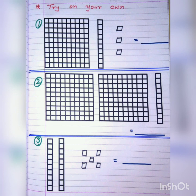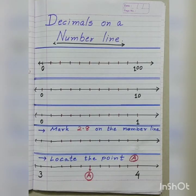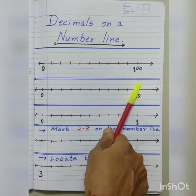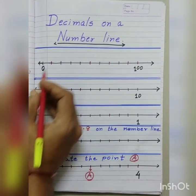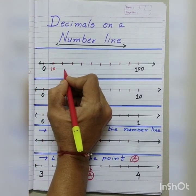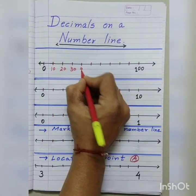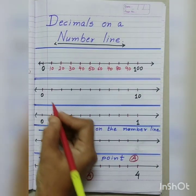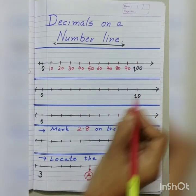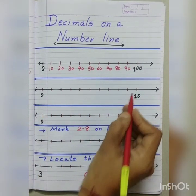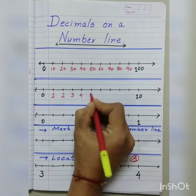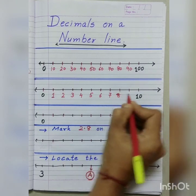Now, try this on your own. Let's draw a number line and show decimals on it. Decimals on a number line. We are having number line here from 0 to 100, and we divide it into 10 equal parts. Each part is 10. So, we write as 10, 20, 30, 40, 50, 60, 70, 80, 90, and 100. If we are having a number line from 0 to 10, similarly, if we divide it into 10 equal parts, each part is 1. So, we write it as 1, 2, 3, 4, 5, 6, 7, 8, 9, 10.